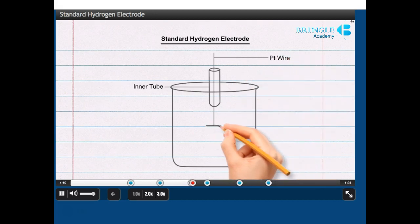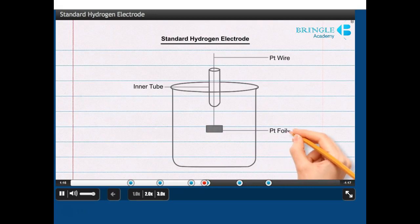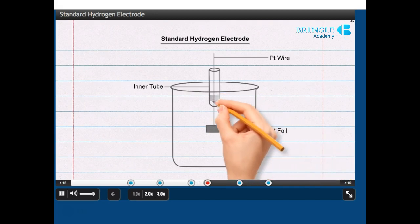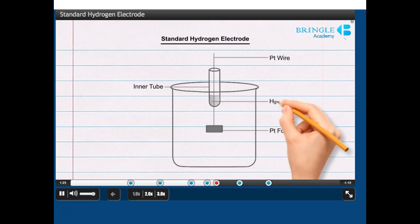Draw a small rectangle touching the bottom of the PT wire. Darken it and label as PT foil. Darken the bottom one-third portion of the inner tube and label it as HG.